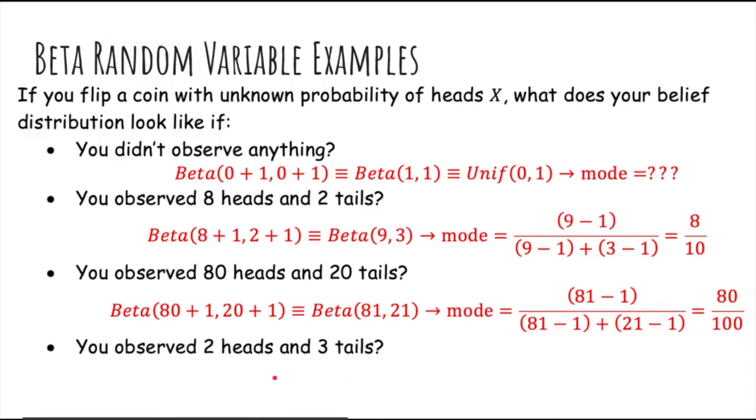What if you observed 2 heads and 3 tails? Well, we have beta of 2 plus 1, and then 3 plus 1, so beta 3, 4, and then the mode is 2 fifths.